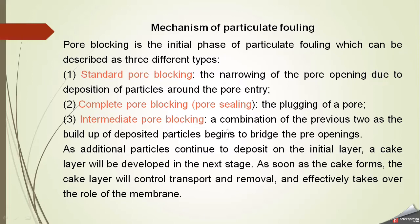Intermediate pore blocking is a combination of the first two mechanisms — some pores are completely blocked and some are partially blocked. Particles begin to bridge the pore openings, where one particle half-blocks a pore and a second particle blocks the remaining part. As additional particles continue to deposit on the initial layer, a cake layer develops. Once the cake forms, the cake layer controls transport and effectively takes over the role of the membrane.